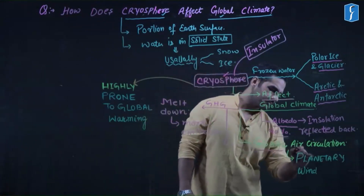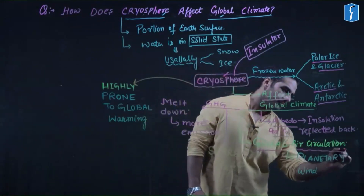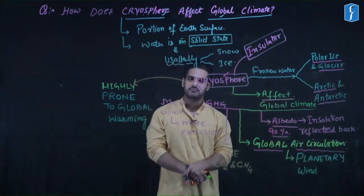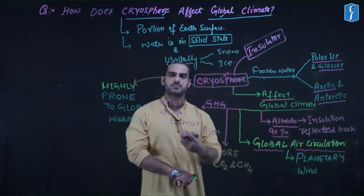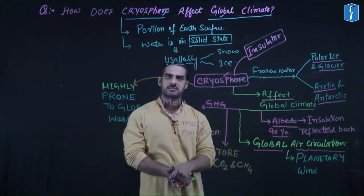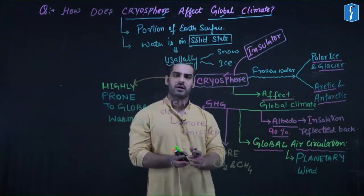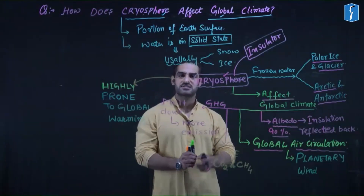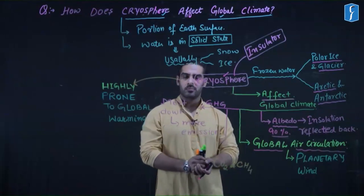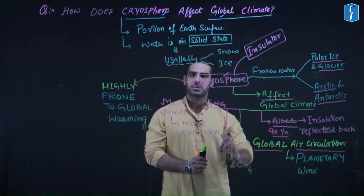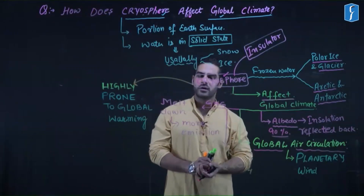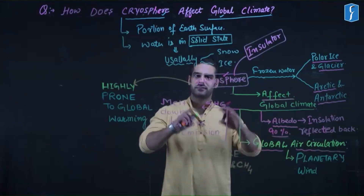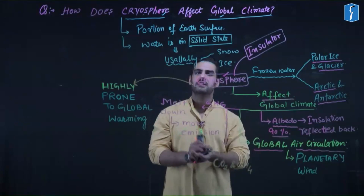Third, global air circulation will be affected. We know about planetary winds like trade winds, westerlies, and polar easterlies. If we talk mainly about polar easterlies and westerlies, their circulation will get impacted because the pressure gradient will be affected. So if the wind pattern is affected, it will directly impact the whole atmosphere.